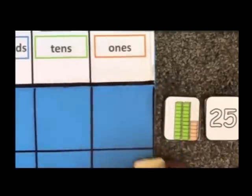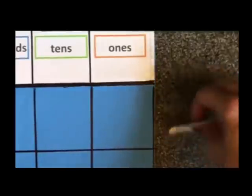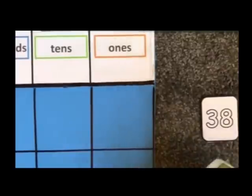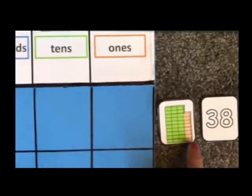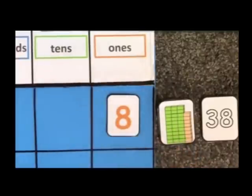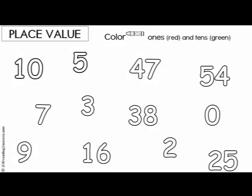We have one more to match — that's 38. We have one pictorial left: it shows eight ones and three groups of ten. We put the eight in the ones place and the three representing three groups of ten in the tens place.